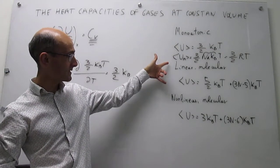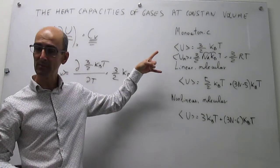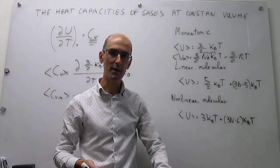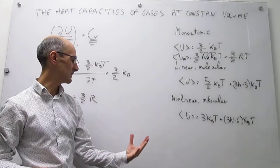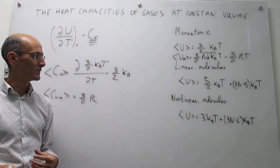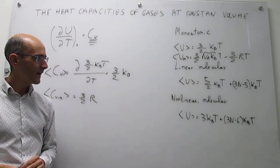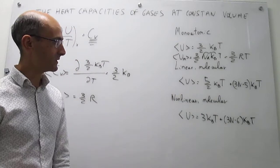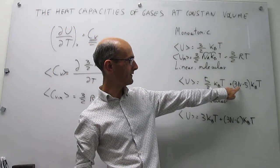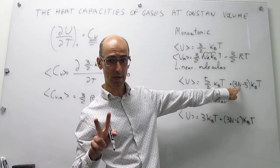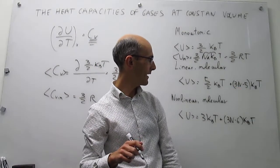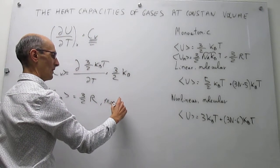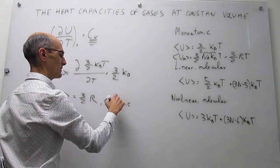Beyond a monatomic ideal gas, if you have a molecular gas it will depend on whether it's linear or nonlinear, and on how many atoms you have, giving heat capacities quite similar in form. We can do this for a diatomic molecule, which is linear. For a diatomic molecule n equals 2, and for the monatomic case you have (1/2)k_BT per degree of freedom.